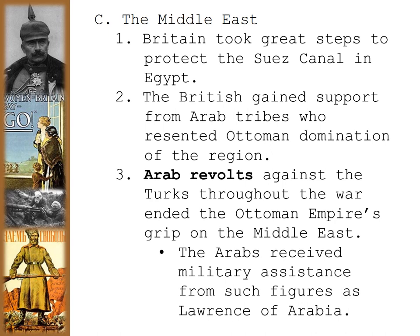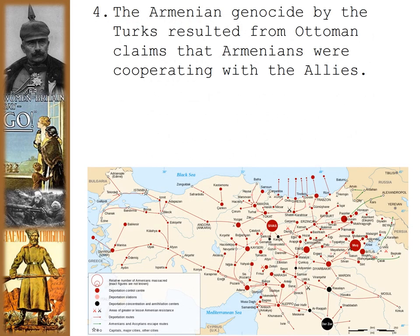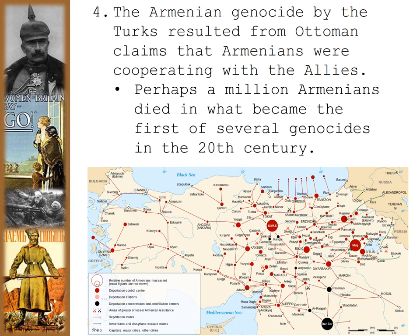Arab revolts against the Turks were fostered by the British and ultimately ended the Ottoman Empire's grip on the Middle East. The Arabs received military assistance from figures such as Lawrence of Arabia. However, the Armenian genocide by the Turks resulted from Ottoman claims that the Armenians were cooperating with the Allies — killing Armenians by the thousands. Perhaps a million Armenians died in what became the first of several genocides of the 20th century.